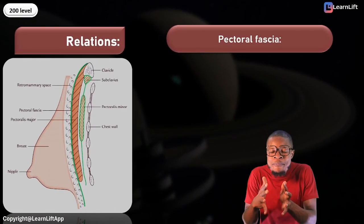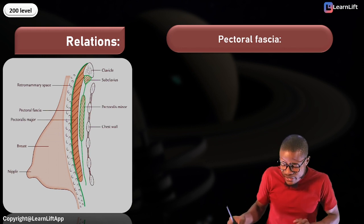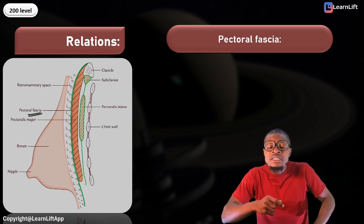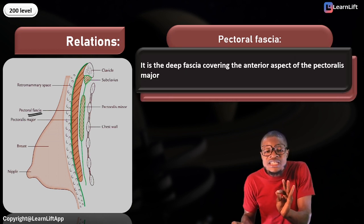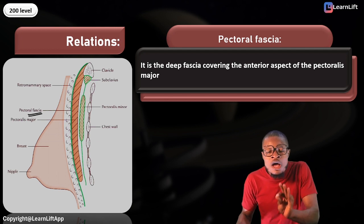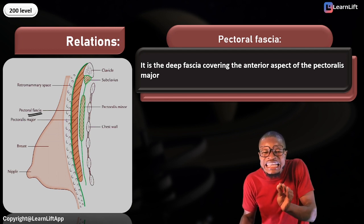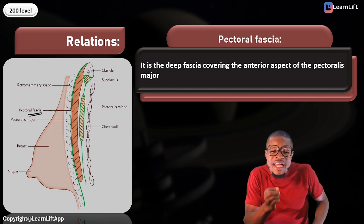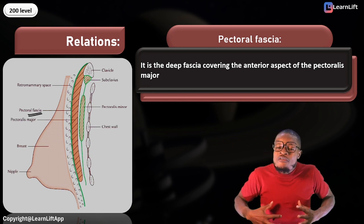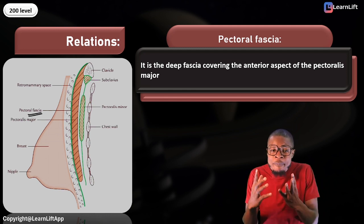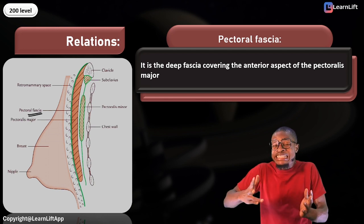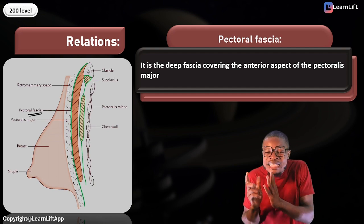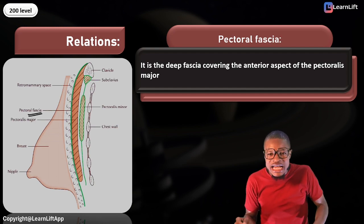The next relation is the pectoral fascia. The pectoral fascia is the deep fascia covering the anterior aspect of the pectoralis major. So what covers the pectoralis major is called the pectoral fascia. We have pectoralis major and pectoralis minor as muscles in the pectoral region, and what covers the pectoralis major is the pectoral fascia.